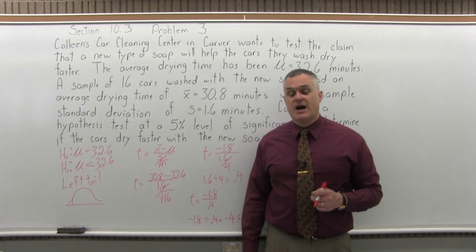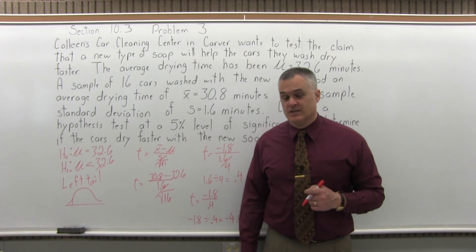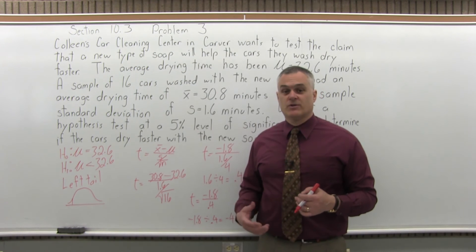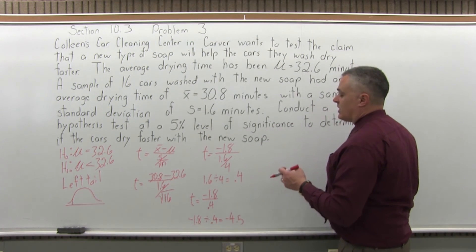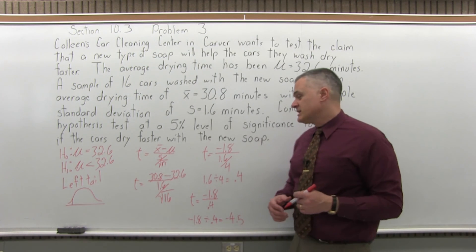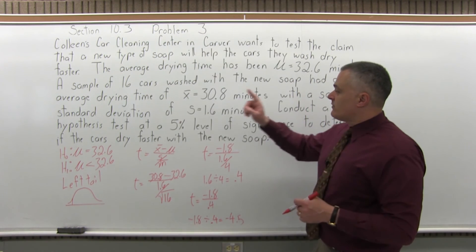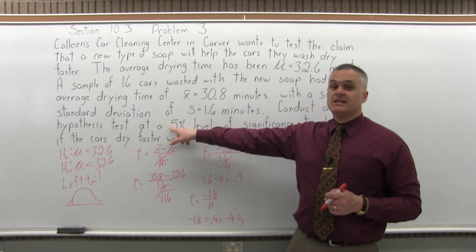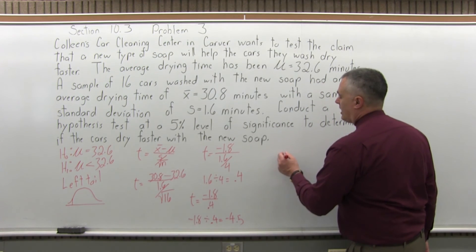is determine what the critical value for T is. When you go into the critical region where you're going to reject the null. So, what we do is we go to the student T chart, which is at the end of the homework assignment. And we look for our level of significance. 5% as a decimal is 0.05. So, that's the column we'll go to, the 0.05 column.